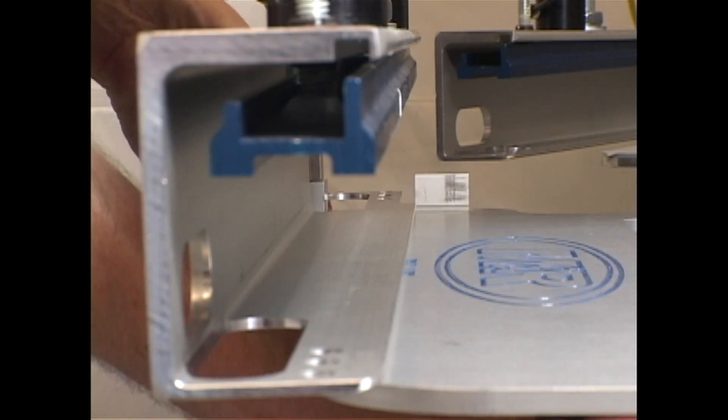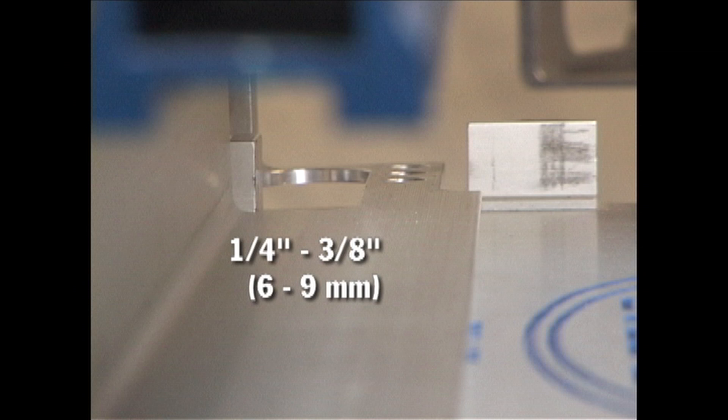There should be a gap of one-quarter to three-eighths of an inch or six to nine millimeters from the inside edge of the front frame holder to the face of the Tri-Lock pallet's front stop block.